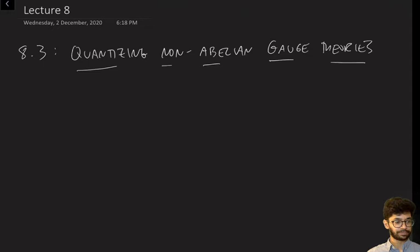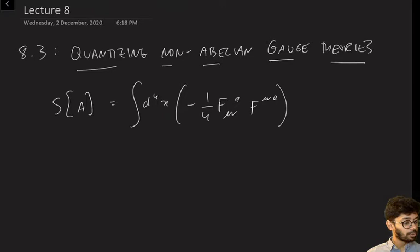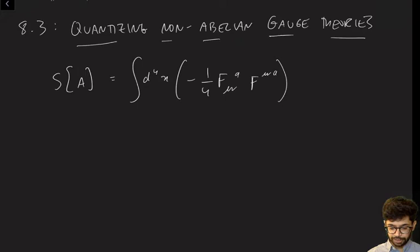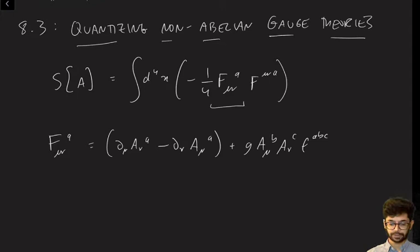We're going to do this without the quarks — we'll just begin by studying pure Yang-Mills theory, which has the following action: minus one-quarter F_μν^a F^μν_a, where a runs over the Lie algebra indices. To understand the structure of the quantum theory, let me expand F_μν^a in terms of the gauge field. F_μν^a equals ∂_μ A_ν^a minus ∂_ν A_μ^a plus g A_μ^b A_ν^c f^{abc}, where f^{abc} is the structure constant. This is pure Yang-Mills without the quarks.